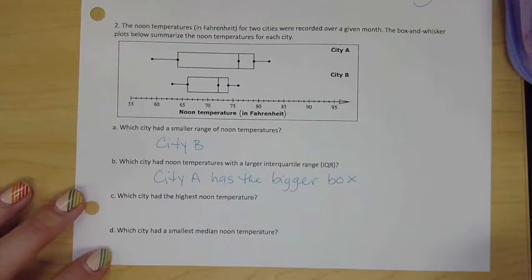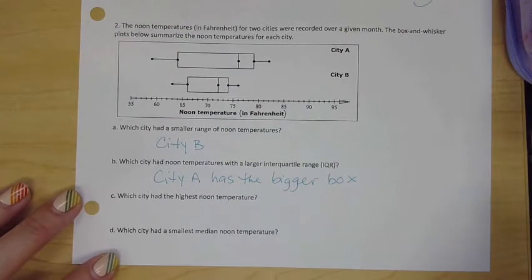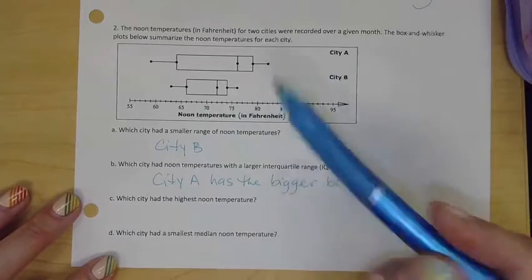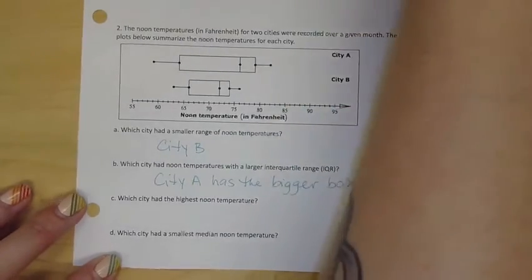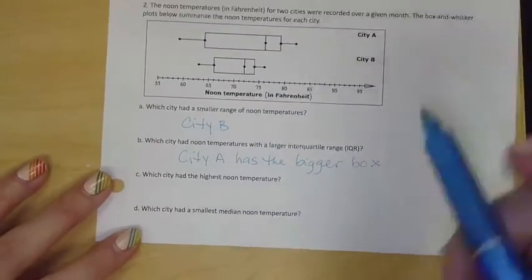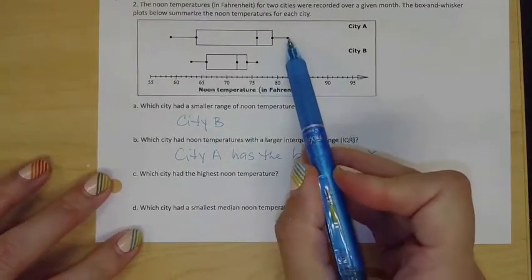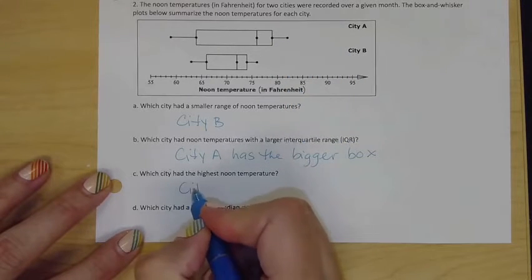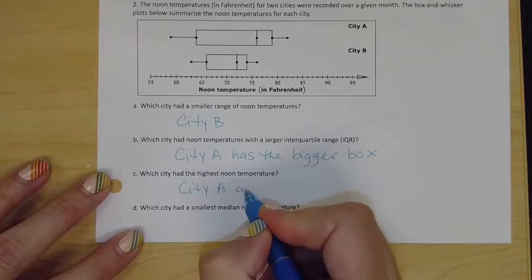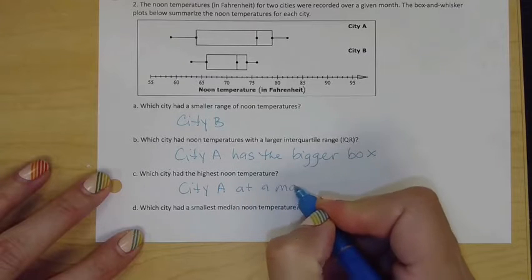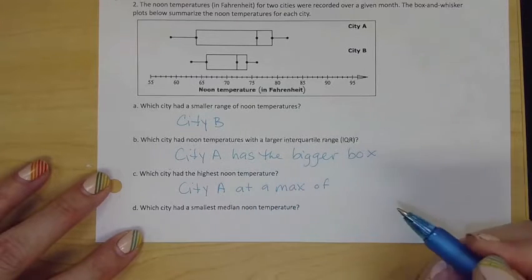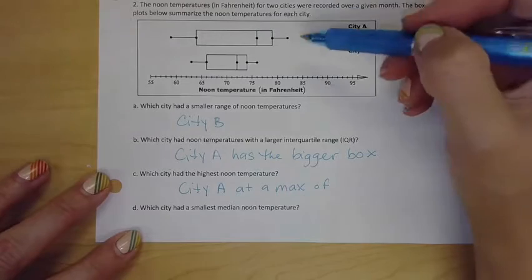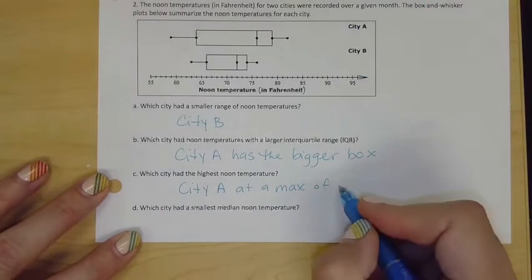Which city had the highest noon temperature? That's going to be the maximum temperature. The highest maximum is in City A and it looks like about 82, so City A at a maximum of, we'll say 82.